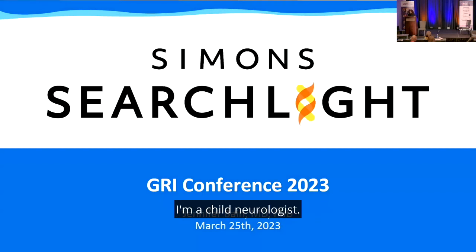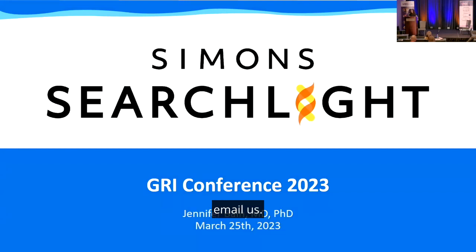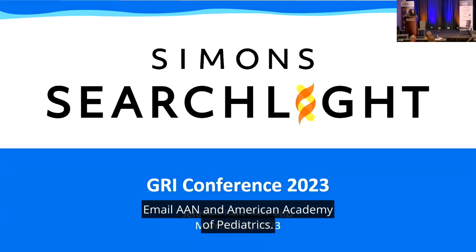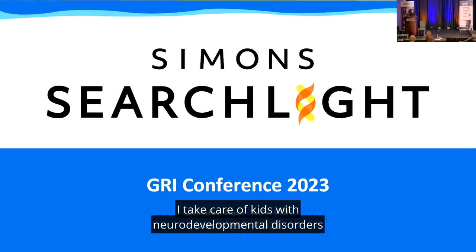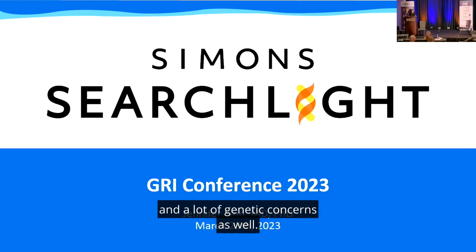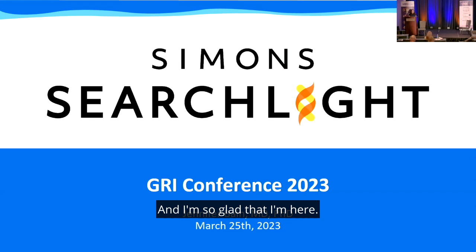Hi, I'm Jennifer Bain, a child neurologist. On behalf of child neurologists, please email the AAN and the American Academy of Pediatrics rather than individual neurologists about the ICD codes. I'm a child neurologist at Columbia University. I care for kids with neurodevelopmental disorders and genetic conditions. I'm normally very animated and pacing, but I had knee surgery a week ago from a skiing accident and I'm so glad to be here.